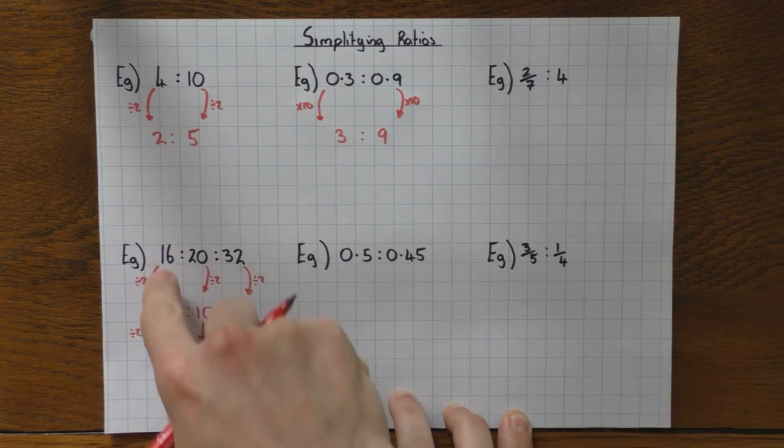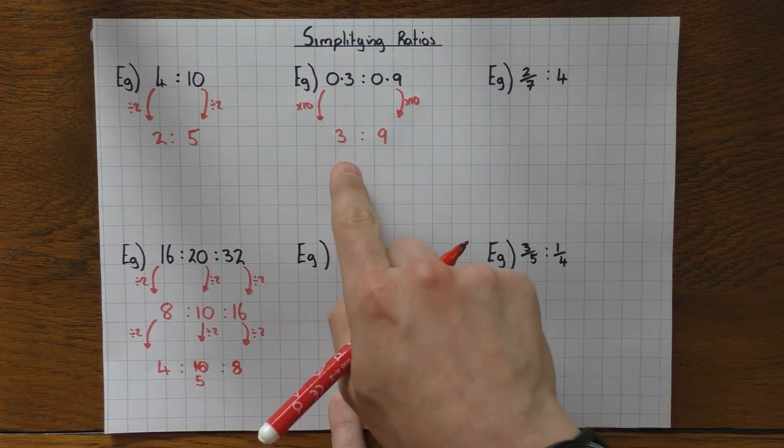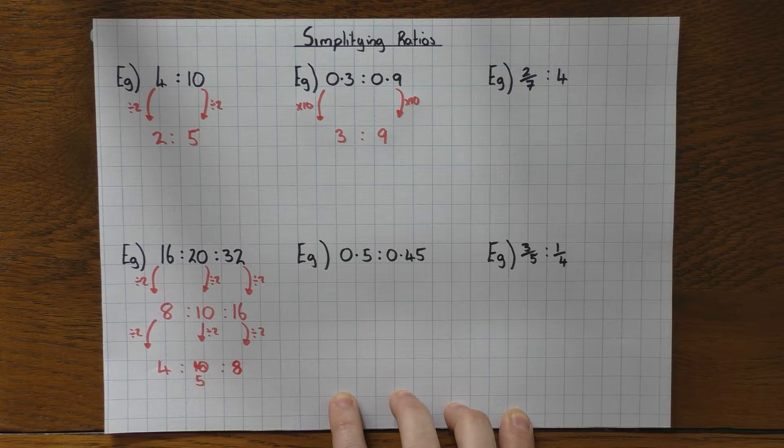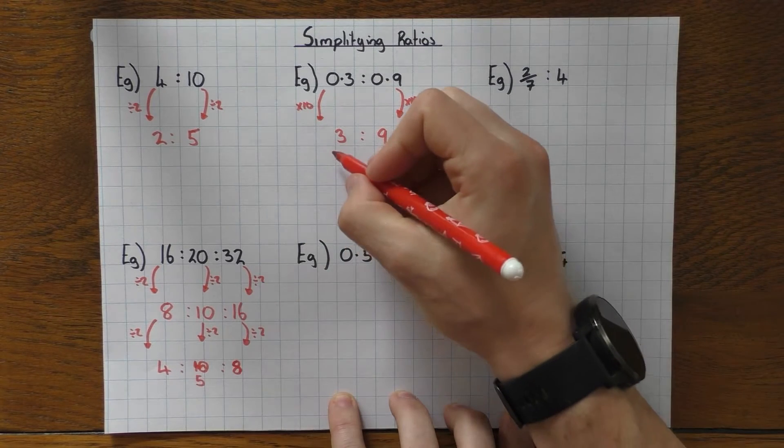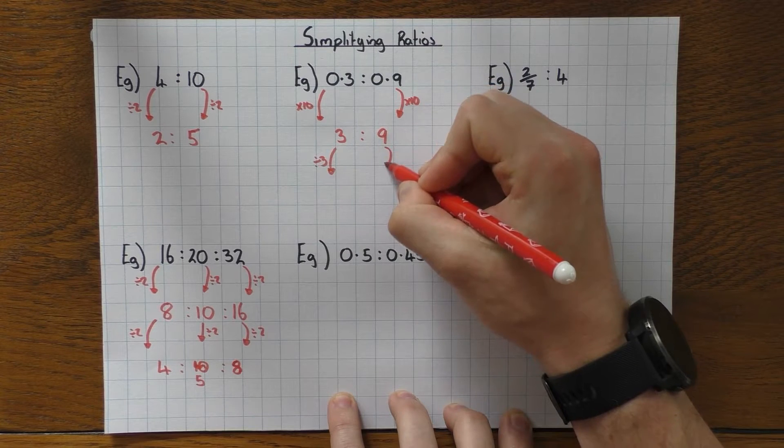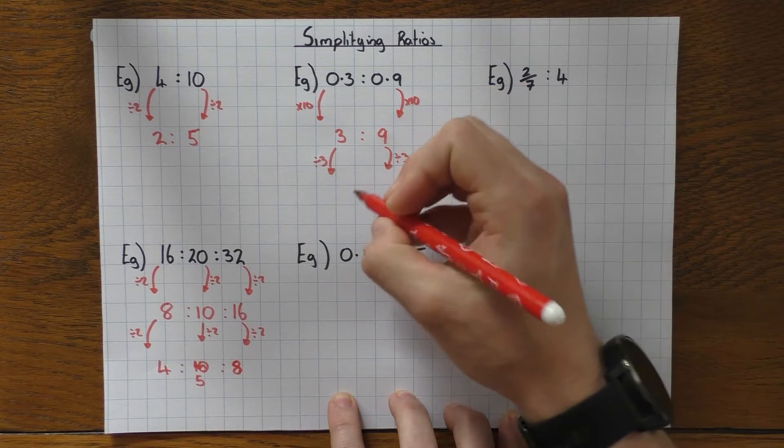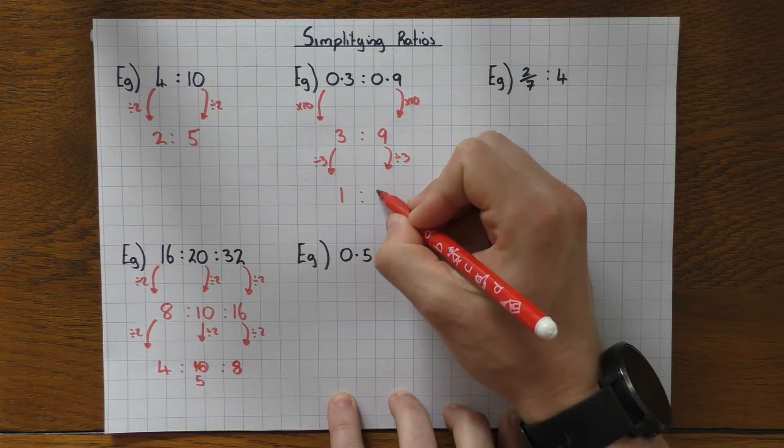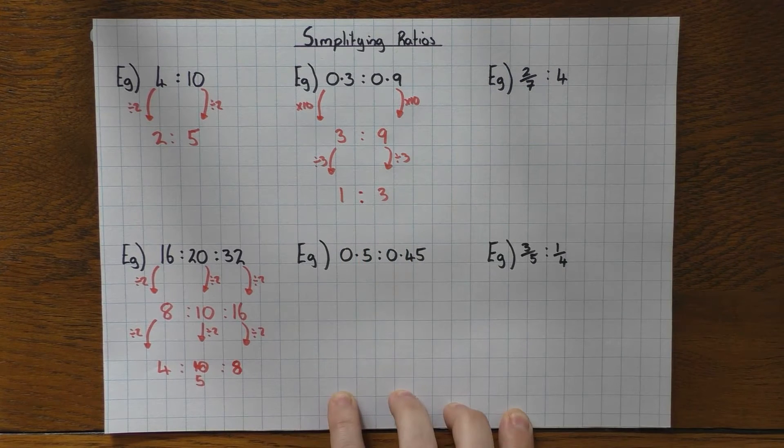And then it's exactly the same steps as we did here. We just look at 3 and 9 and say, right, what's a common factor? What number goes into both of them? And you might already be ahead of me. 3 will go into both of them. So we divide by 3. So I'm left with 1 to 3 as my simplified ratio.